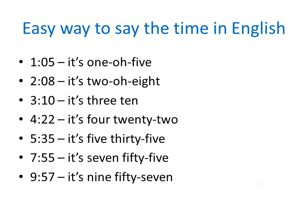There is another way to tell the time in English — I think it's easier. It's one oh five. It's two oh eight. It's three ten. It's four twenty-two. It's five thirty-five. It's seven fifty-five. It's nine fifty-seven.